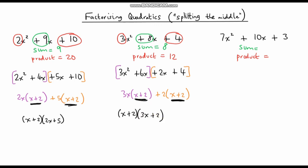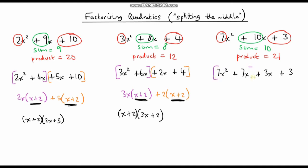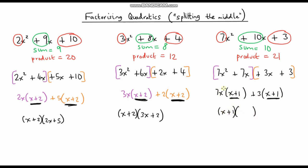For the final question, find two numbers with a sum of positive 10 and a product of 7 times 3, which is 21. Those numbers are 7 and 3, since 7 times 3 is 21 and 7 plus 3 is 10. Rewriting the expression and splitting the middle, I factor out a 7x from the first part — leaving x plus 1 — then factor out a positive 3 from the second part — also leaving x plus 1. Factoring out x plus 1 gives the answer: (x + 1)(7x + 3).